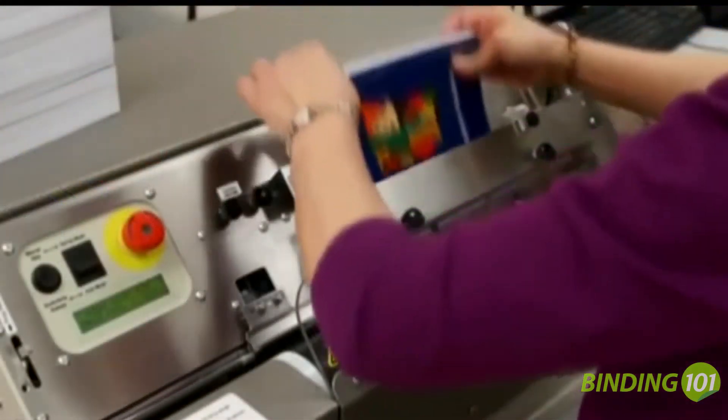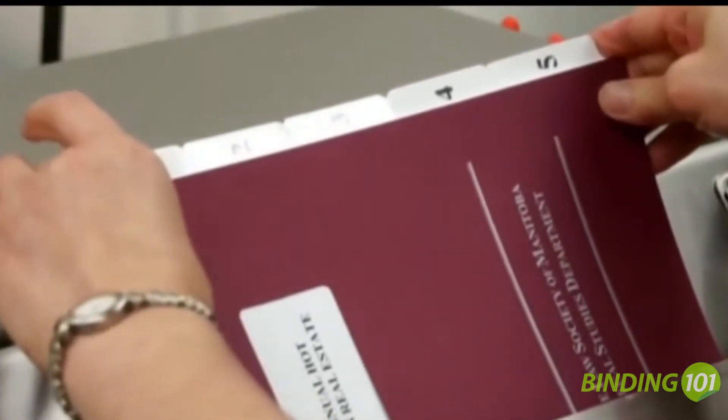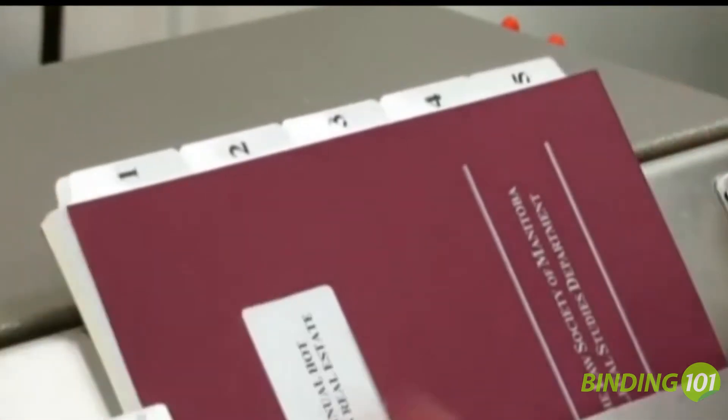The pre-punched book is logically placed vertically into position on the Coilmatic, working with a simple force of gravity to guide the book down onto the machine's spine formers. Vertical book placement also means tabs or extended covers are easily accommodated.